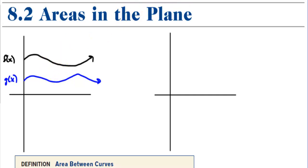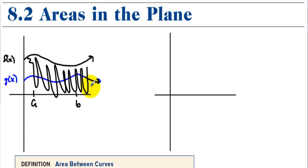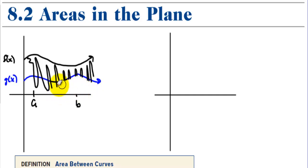Now what we want to do is find the area in between the two curves. Let's say we're trying to find the area between the two curves from a to b. We could take the area under f and subtract out the area under g — subtract out all of this area right here — and what would be left is the area in between the two curves.